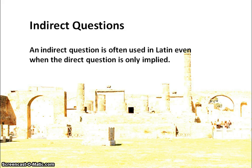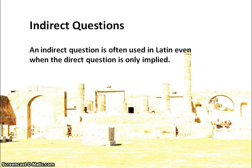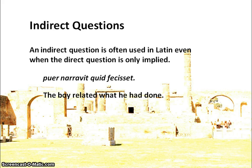Indirect questions are often used in Latin even when the direct question is only implied. Above-the-neck verbs for indirect questions can include words beyond rogo and quaero. For example: puer narravit quid fecisset — 'the boy related/explained what he had done.' The original direct question 'what did you do?' was not necessarily asked — it may only have been implied.